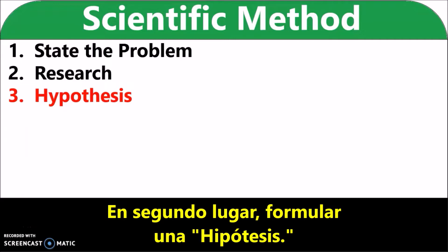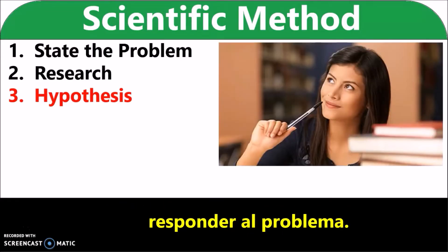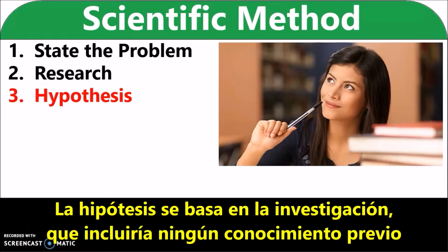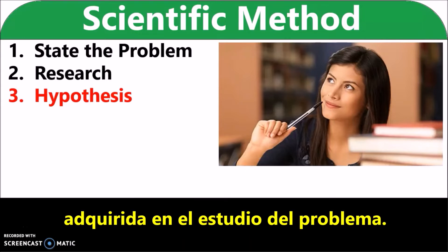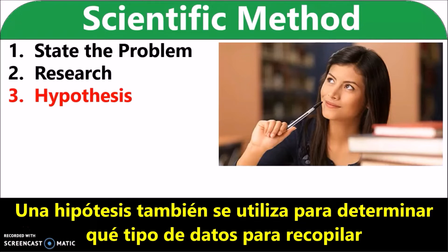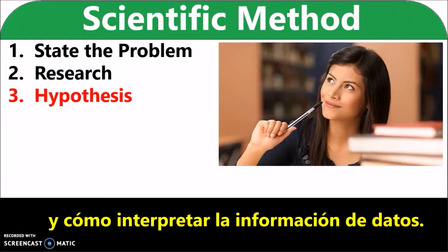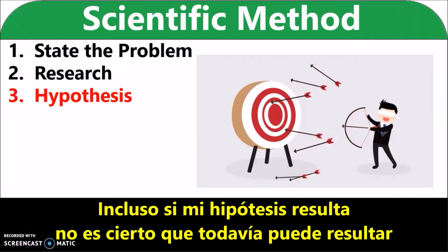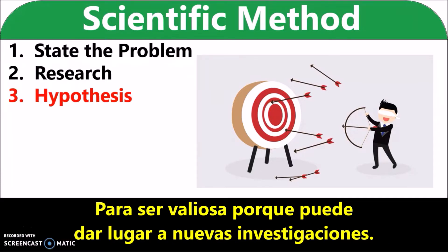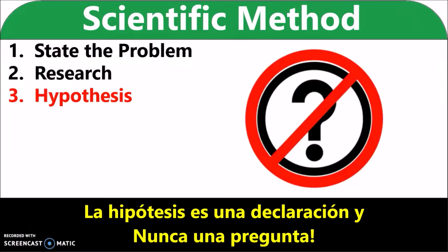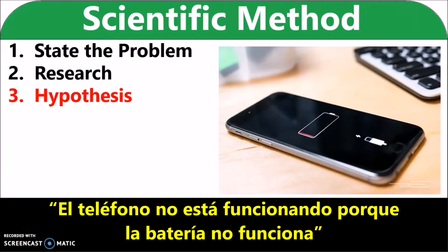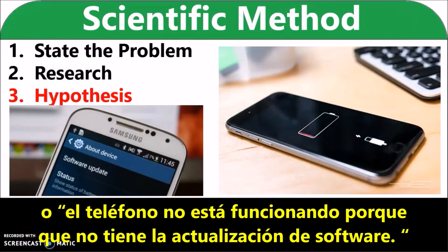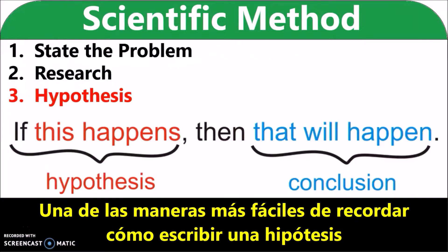Second, form a hypothesis. A hypothesis is a prediction about the possible answer to the problem. The hypothesis is based on research, which would include any previous knowledge about the problem, and observations and information gained from studying the problem. A hypothesis is also used to determine what type of data to collect and how to interpret the data. A hypothesis must also be testable. Even if my hypothesis turns out not to be true, it still may prove valuable because it may lead to further investigations. The hypothesis is a statement and never a question. For our example, we could say that the phone is not working because the battery does not function, or the phone is not working because it does not have the software update.